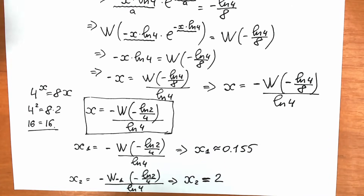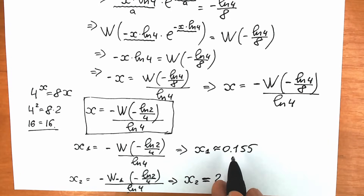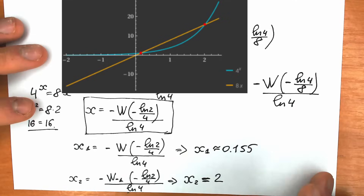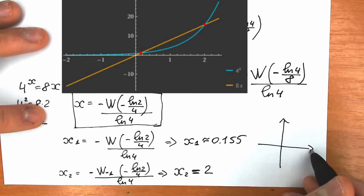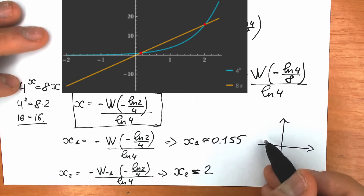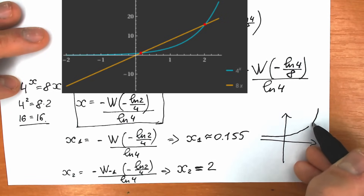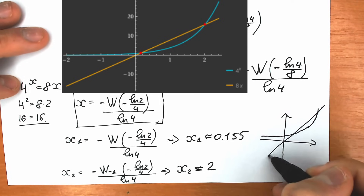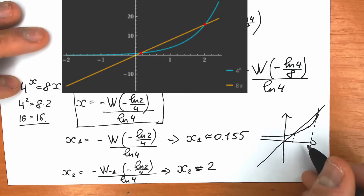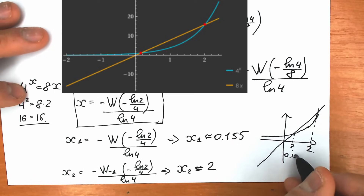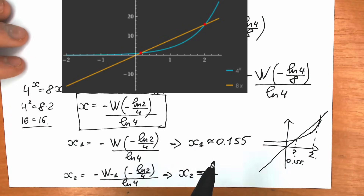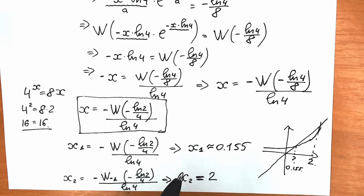But as you can see, there is no way you will find the first solution x ≈ 0.155 by inspection. When we sketch a graph, we have the exponential function 4 to the x and the linear function 8x — and you can see they intersect at two points, confirming two solutions. x second equals 2 is easily found by inspection, but x first cannot be found that way.